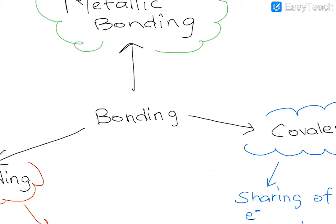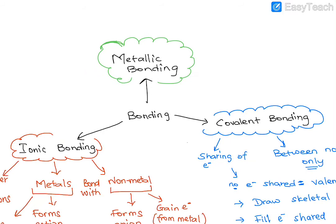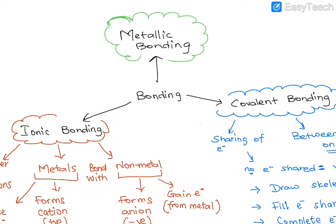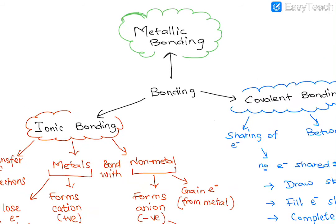Hi everyone, this video is a recap of what we have already covered on bonding. We have studied two types of bonding: ionic bonding and covalent bonding. We are going to be looking at metallic bonding in the coming lessons.